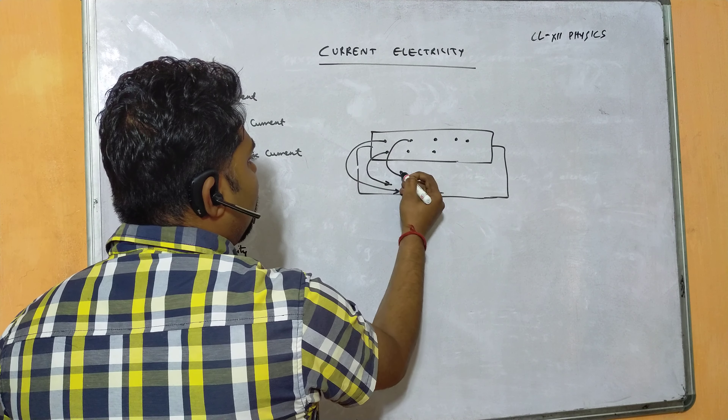Electrical resistance: electrical conductors oppose the flow of electrons passing through them. This opposition arises due to collisions of moving electrons with vibrating atoms, defects in the crystal lattice, and impurity atoms. According to Ohm's law, R = V/I, and the SI unit of resistance is ohm (Ω).